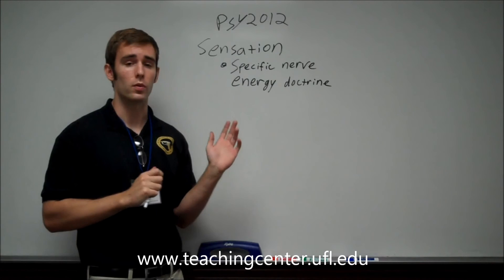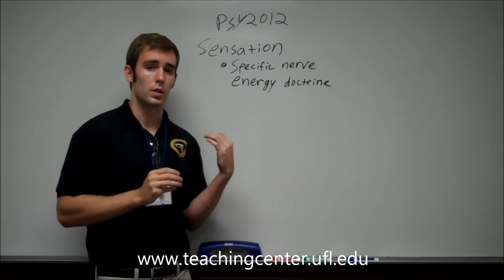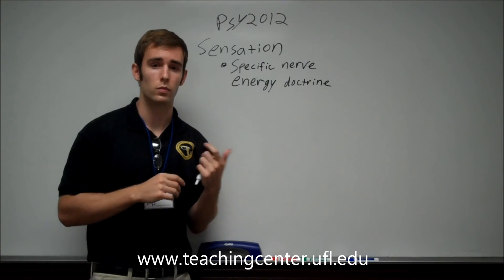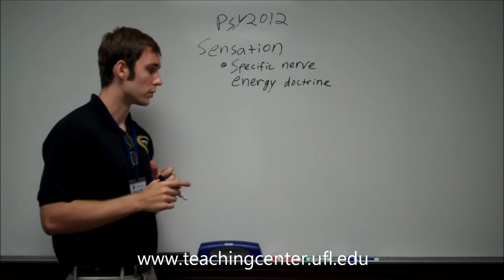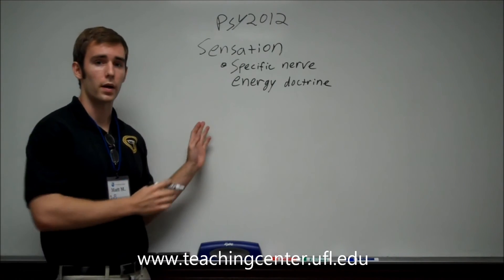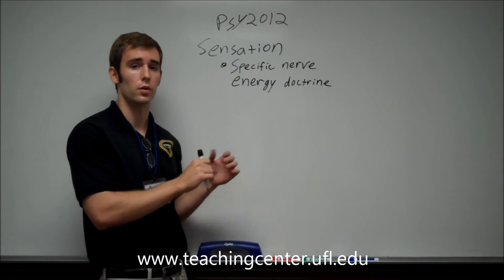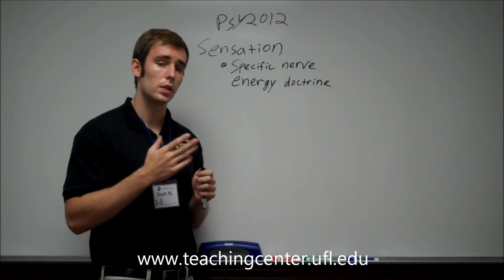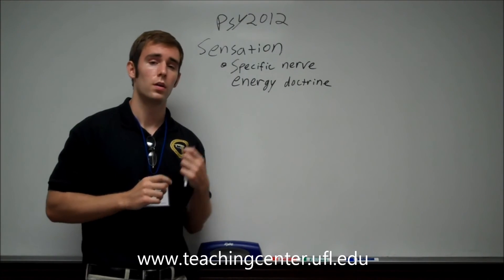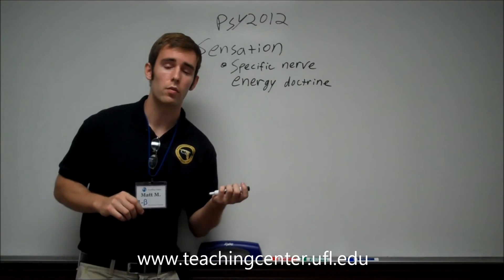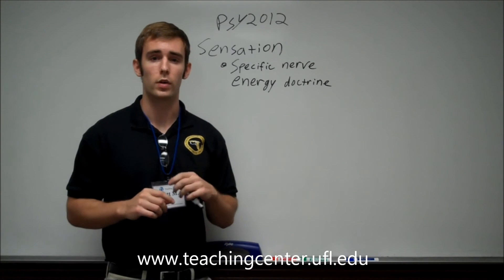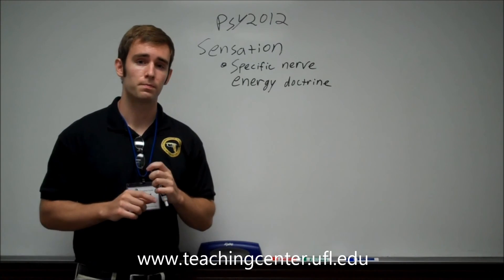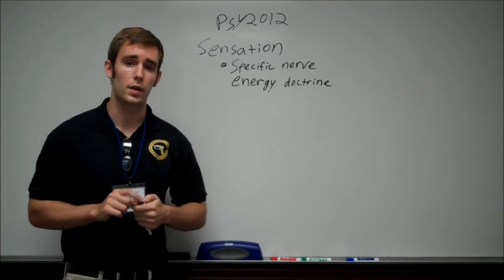Now, there can be different types of encoding. There can be spatial coding and rate coding. Spatial deals with where the stimulation occurs, while rate coding deals with the frequency of the stimulation. An example of that would be place coding and rate coding in the auditory system, which we'll talk about in a little bit.